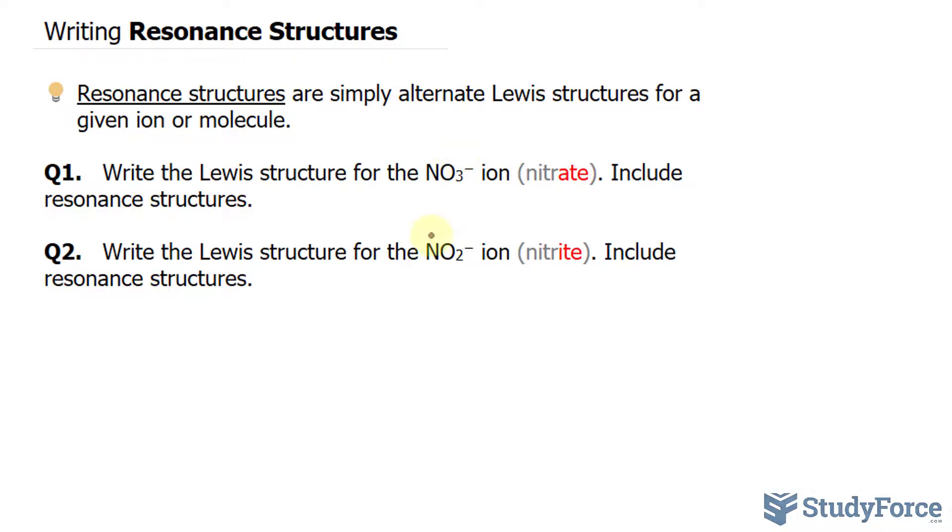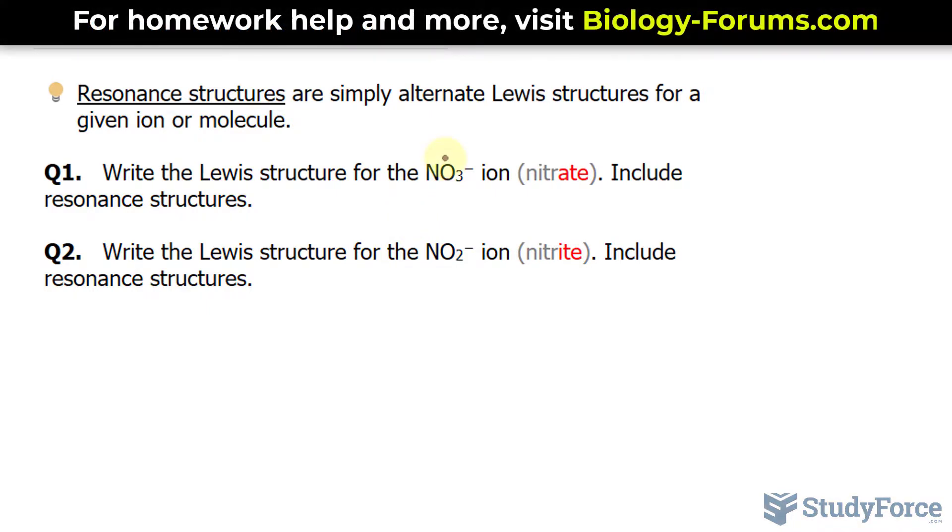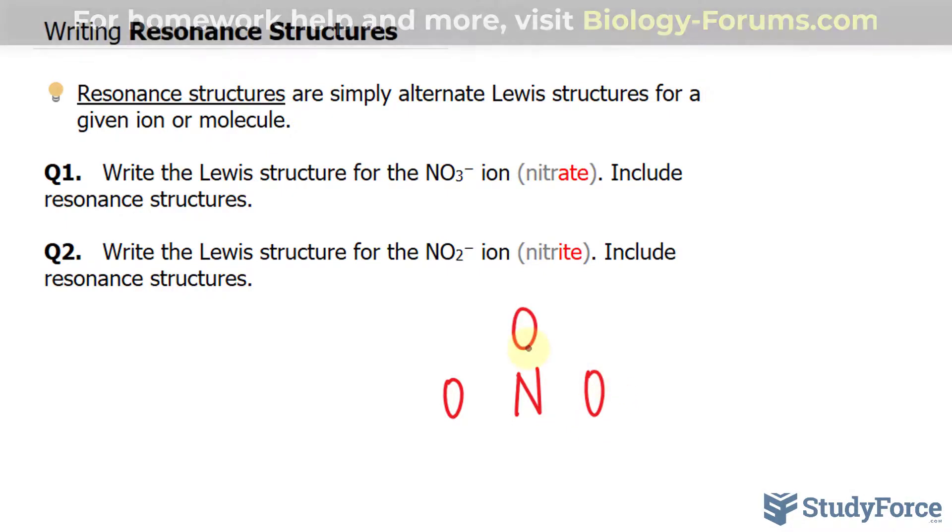I'll start by creating the Lewis structure. Nitrogen is less electronegative than oxygen, so the oxygens will surround the nitrogen, nitrogen being in the central position. Next, the valence electrons for nitrogen are five, and there's only one nitrogen, so five times one.